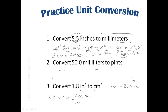If we use the conversion factor only once, we'd get inch·centimeters, which is meaningless — that's a length, not an area. We need to square everything within the parenthesis: one inch squared, and 2.54 squared equals 6.4516 centimeters squared. Now we're ready to calculate: 6.4516 times 1.8 equals 11.613.